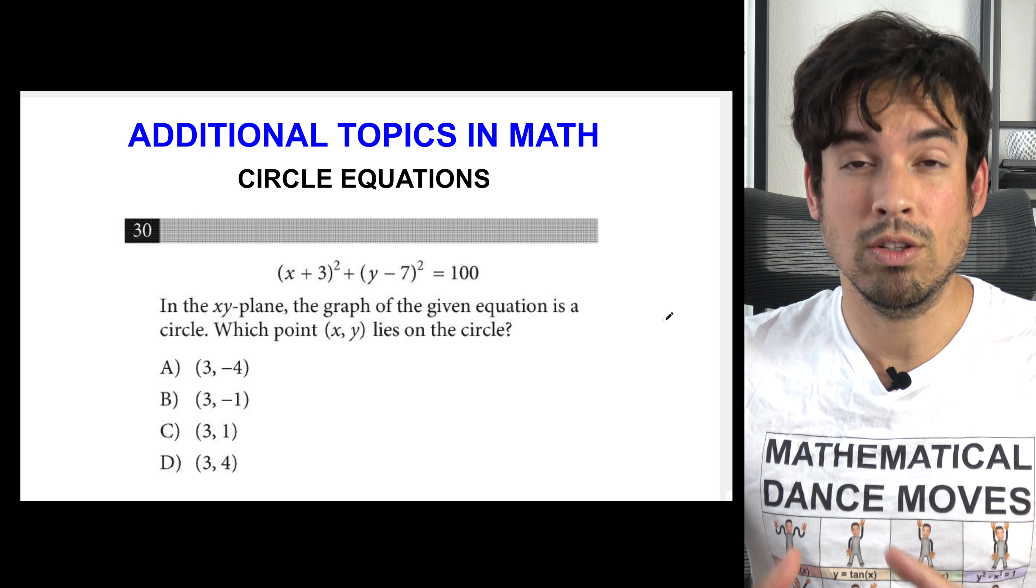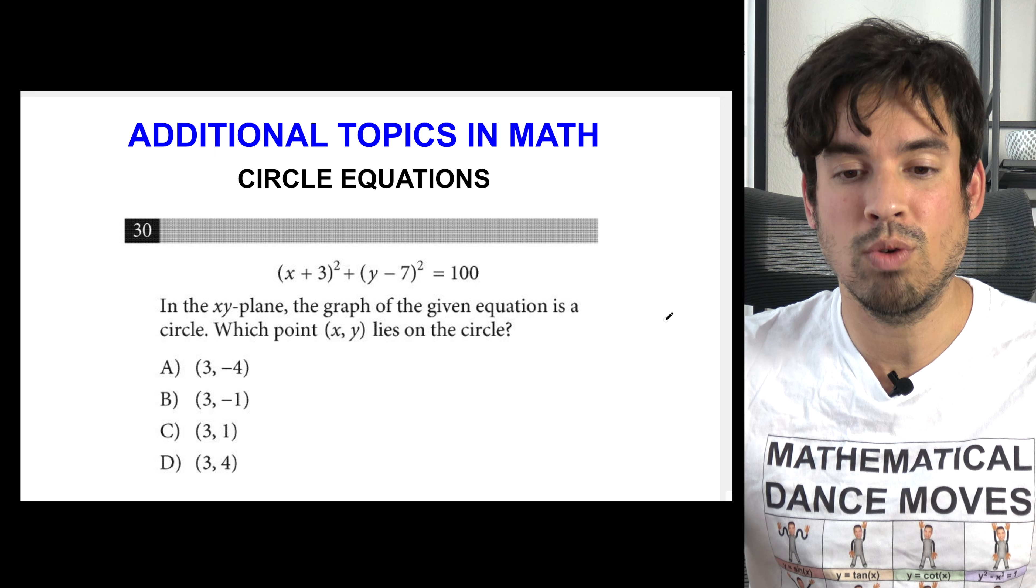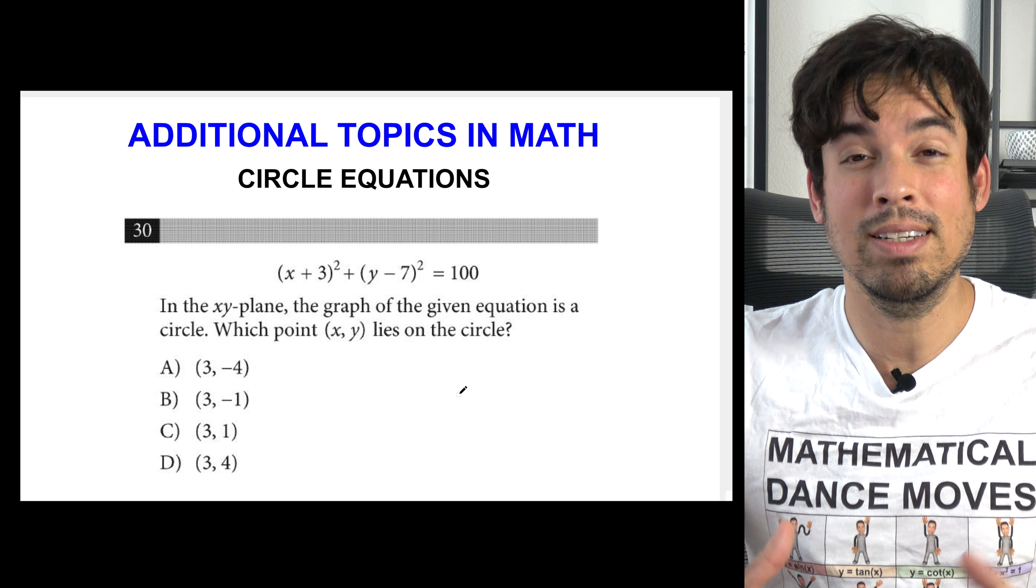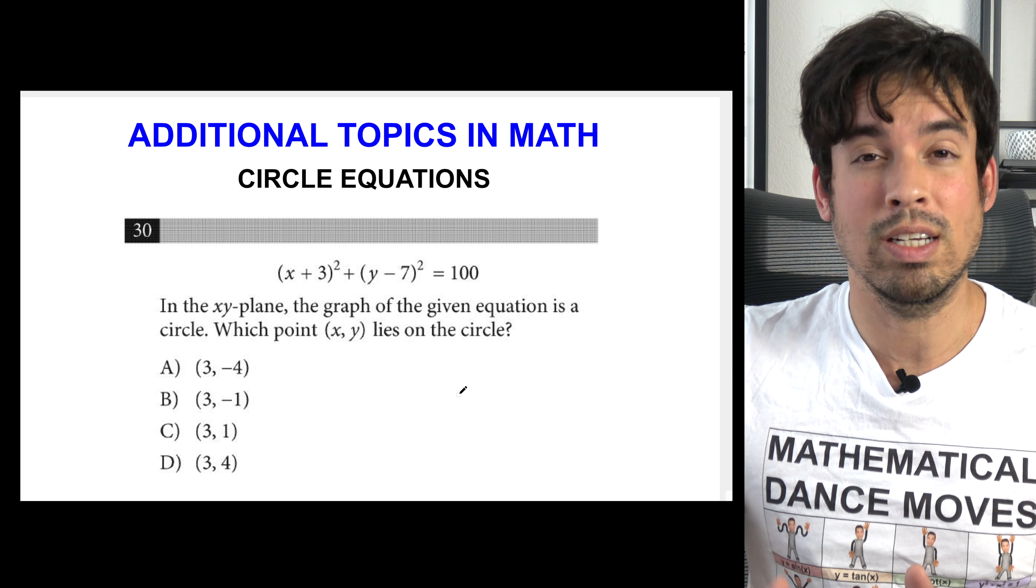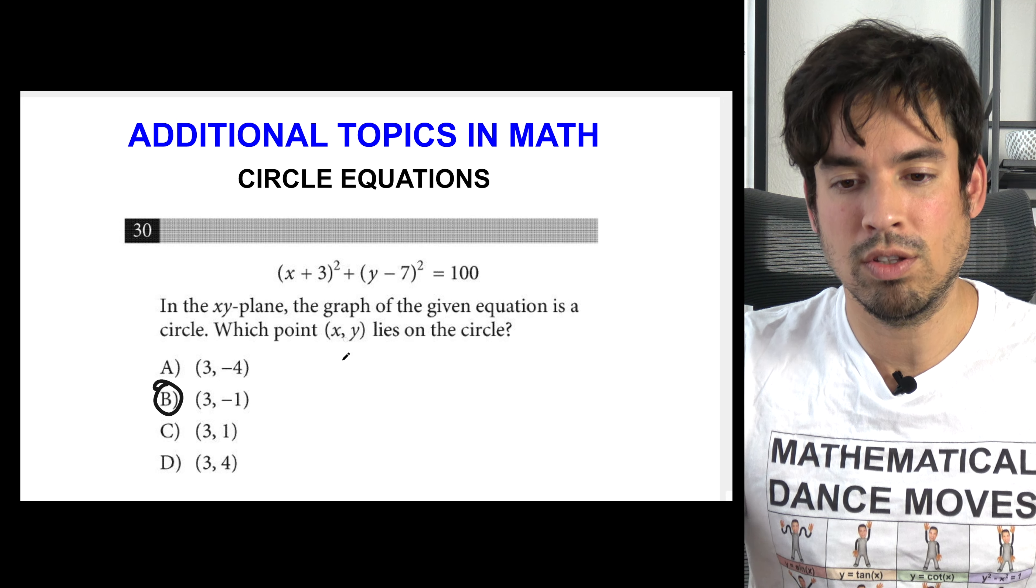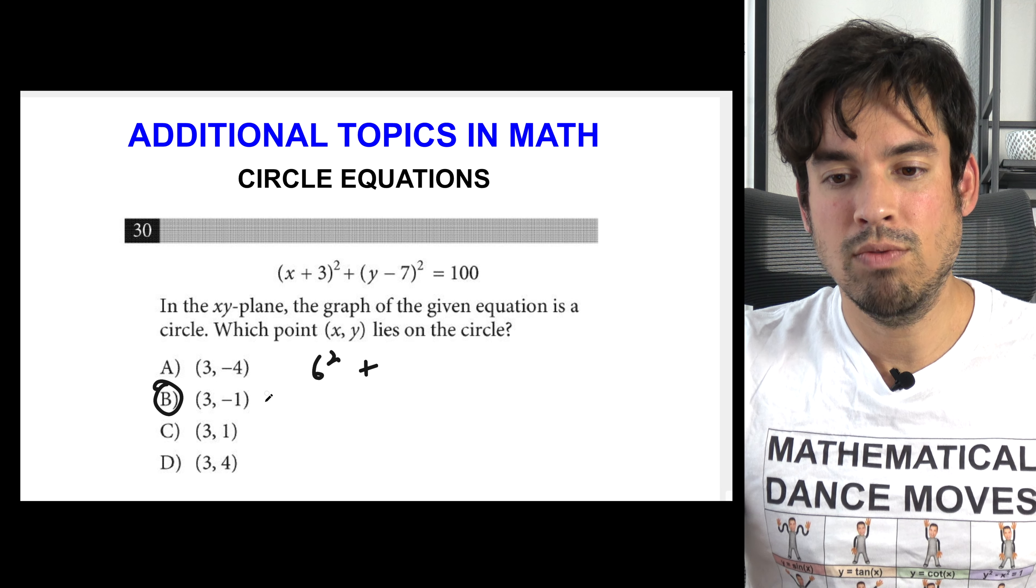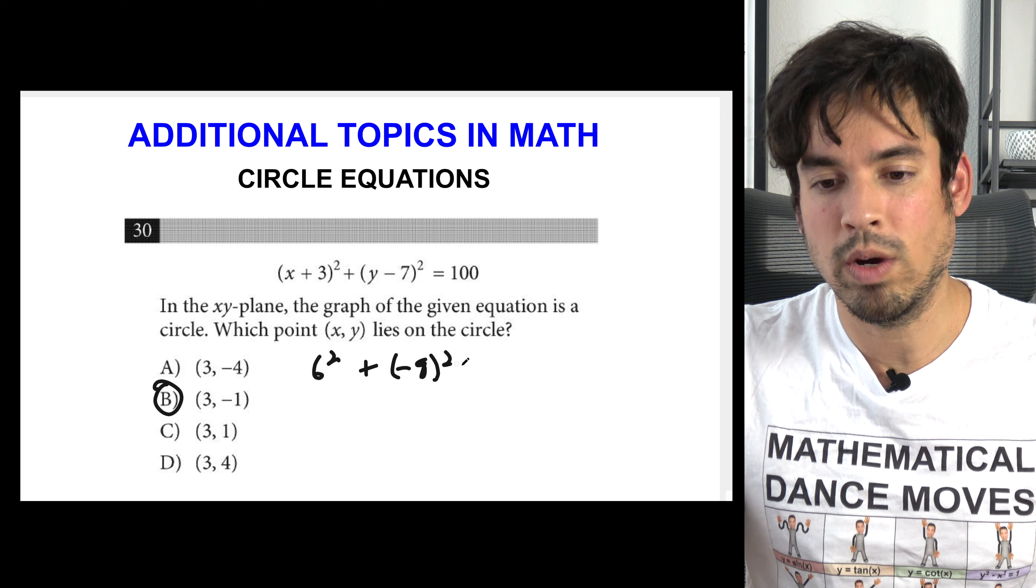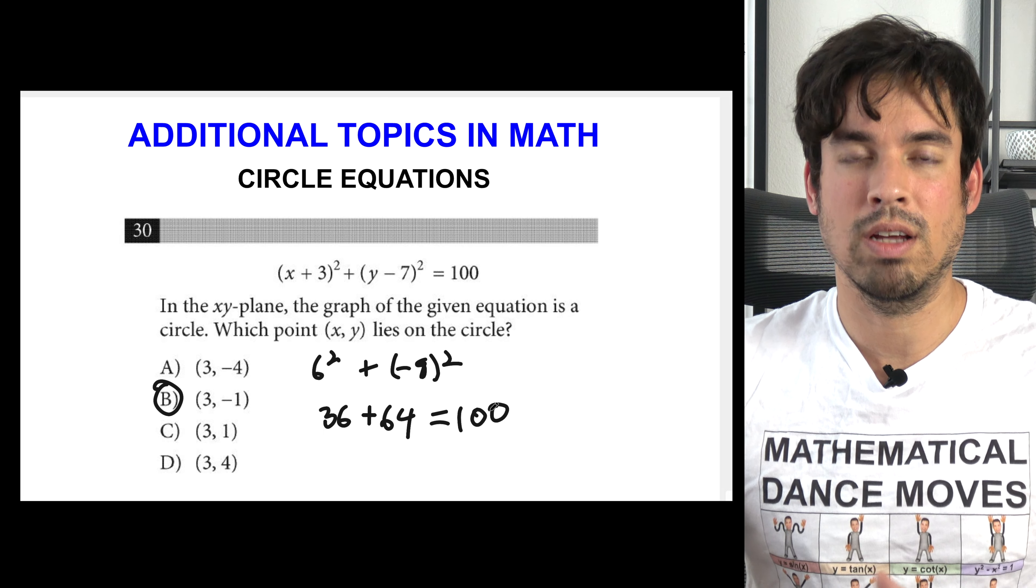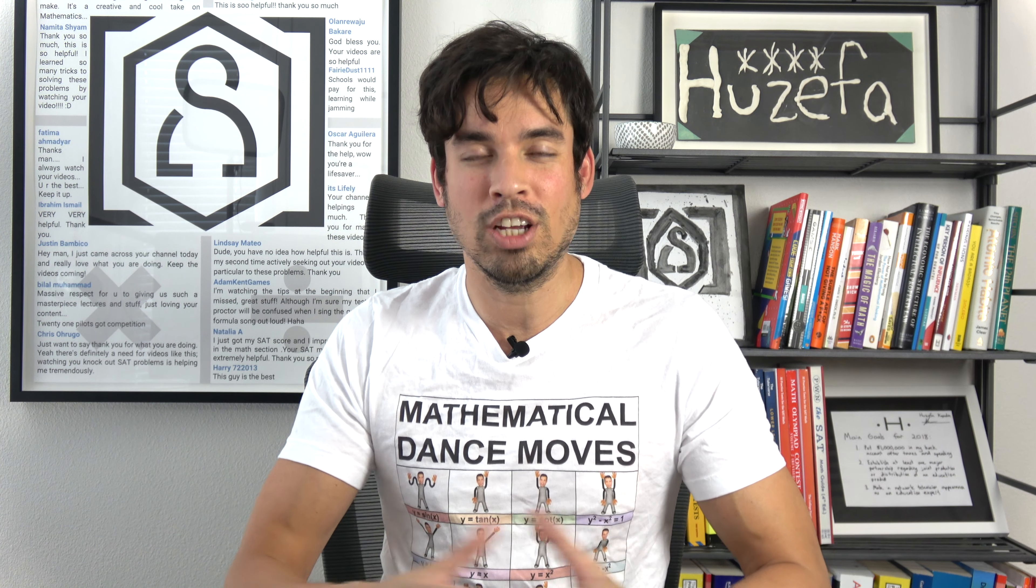Last but not least, in this problem we're ending with another circle equation problem. It says in the xy plane, the graph of the given equation is a circle. Which point xy lies on the circle? Now this one is great because even though it looks difficult, all you got to do is plug and chug and see which one gives you a true equation. The only one that works is B because 3 plus 3 is 6 squared, negative 1 minus 7 is negative 8 squared, that becomes 36 plus 64 equals 100, and we're done. I hope you guys enjoyed this video and if you did please click that like button. And if you want to see more videos from the Scalar Learning channel make sure to click subscribe. Thank you guys so much for joining and I will see you in the next video. Take it easy.